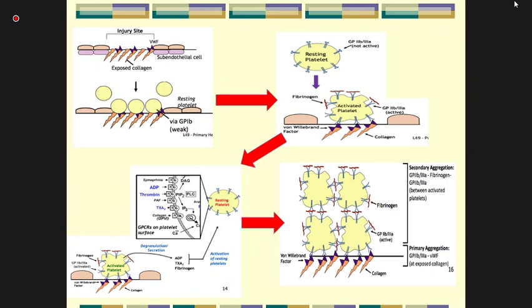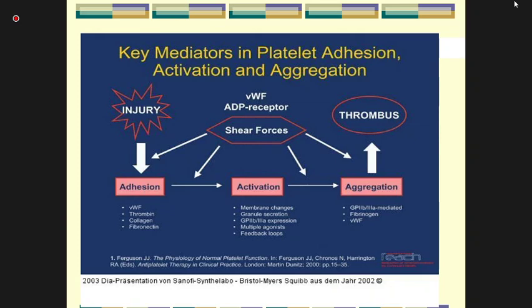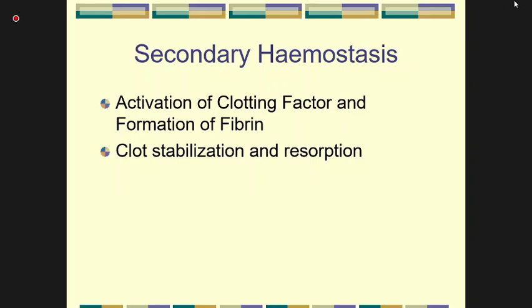To recap the important mediators in platelet adhesion and aggregation: von Willebrand factor, collagen, thrombin, fibrinogen, and fibronectin. Membrane changes also occur. This completes the discussion of primary hemostasis.